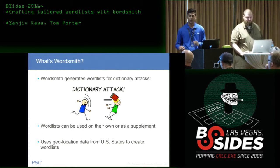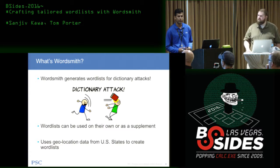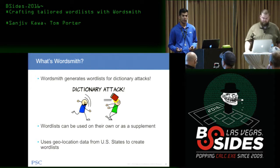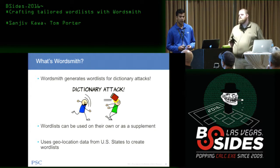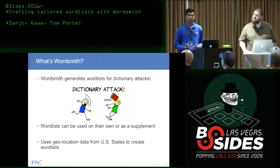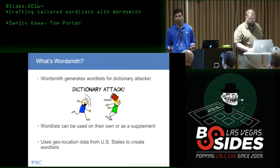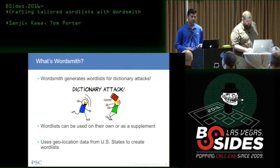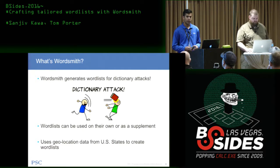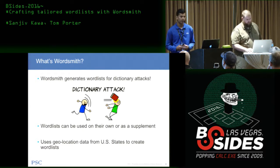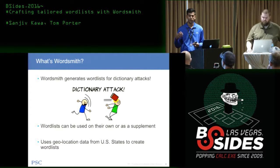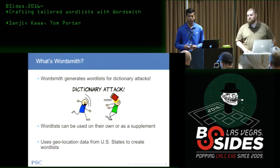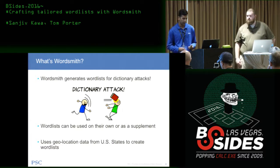Before we jump in — what's WordSmith? It's basically a tool which can generate dictionaries. The only thing we're doing differently is generating dictionaries based on U.S. states and specifically geolocation data. Geolocation data can be boiled down to cities, landmarks, zip codes, area codes, towns, and that sort of thing. We're taking these word lists and cracking against large hash sets to identify what passwords people have and if they're introducing geo-based passwords into their phrases.